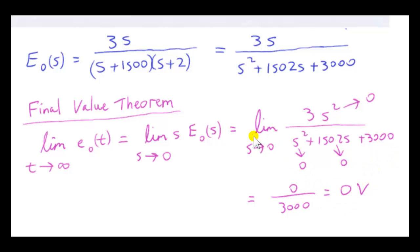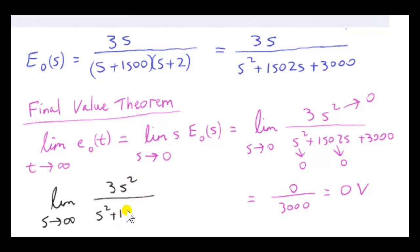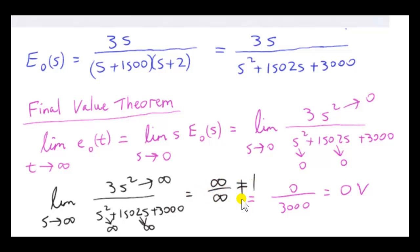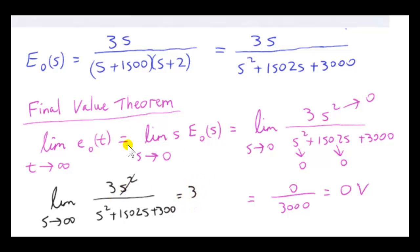That's the end of the question. One note about the previous limit: when taking the limit as S approaches infinity of 3S squared over S squared plus 1502S plus 3000, you can't simply let S approach infinity directly, because both numerator and denominator approach infinity, giving an indeterminate infinity over infinity form. That's why we divided above and below by the highest power of S — giving us 3 over 1, which is 3.